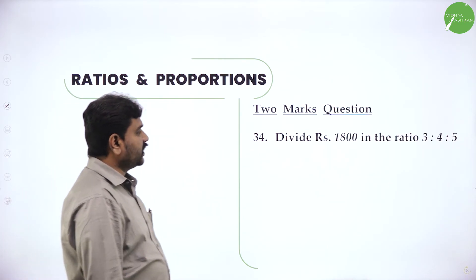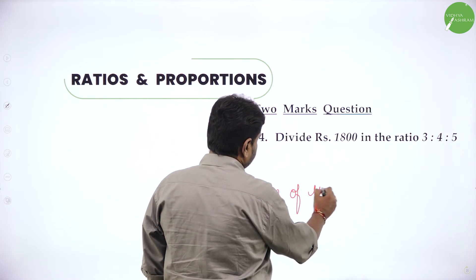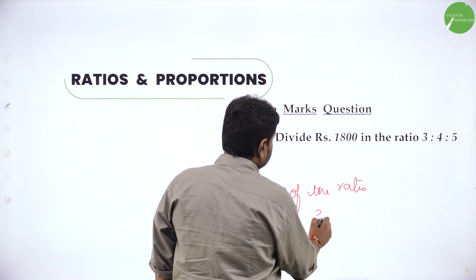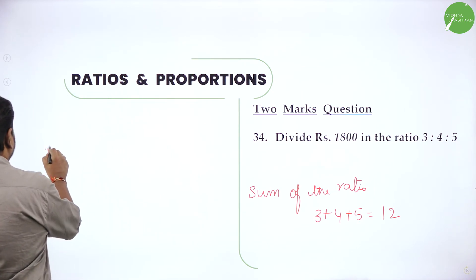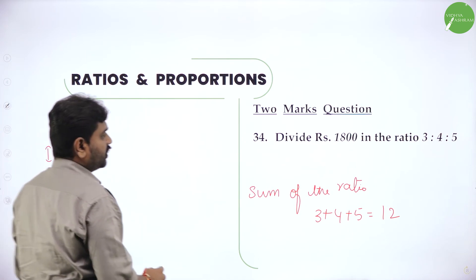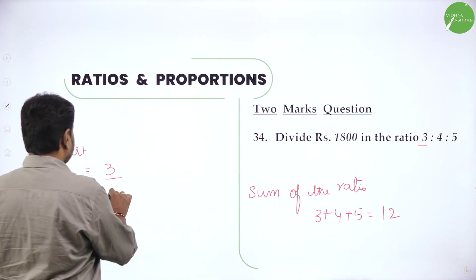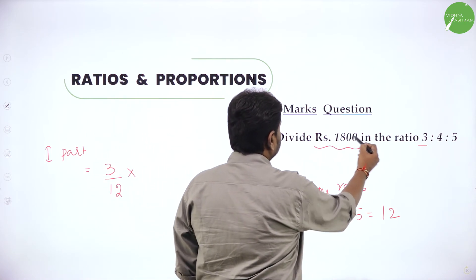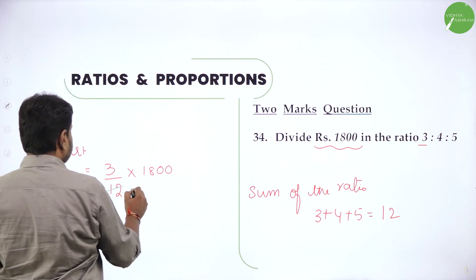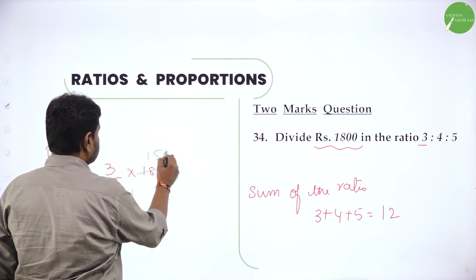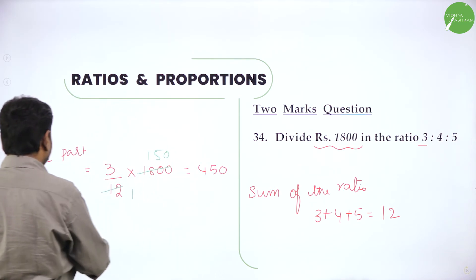Then divide 1,800 in the ratio 3 is to 4 is to 5 — simple. First find sum of the ratio: 3 plus 4 plus 5, that is 12. Now divide it. First part — the first value of the ratio is 3. So 3 divided by sum of the ratio, which is 12, into total amount 1,800. Simplify: 1,800 divided by 12 is 150. Then 3 into 150 is 450 rupees. First part is 450 rupees.